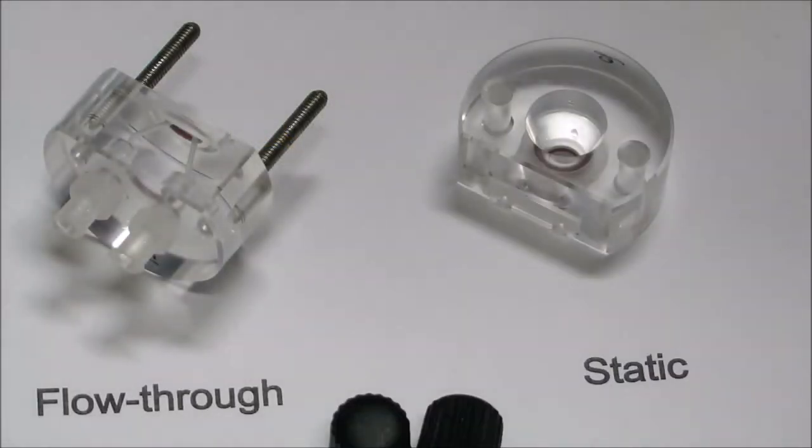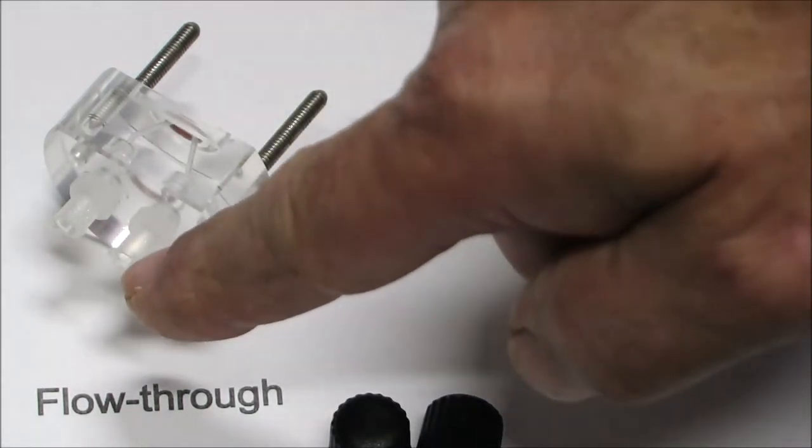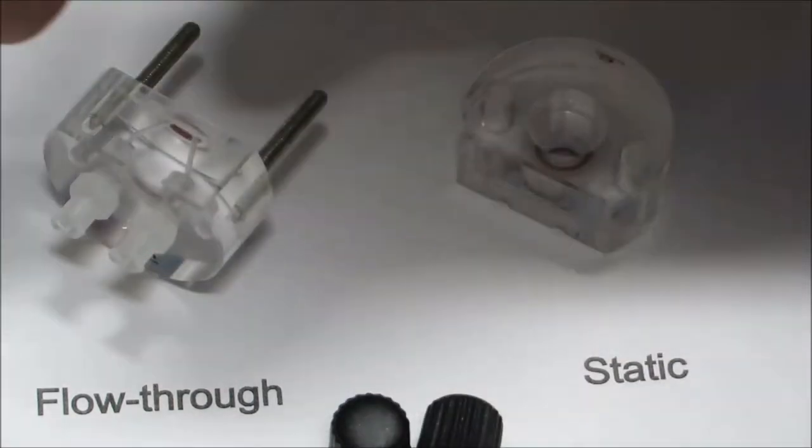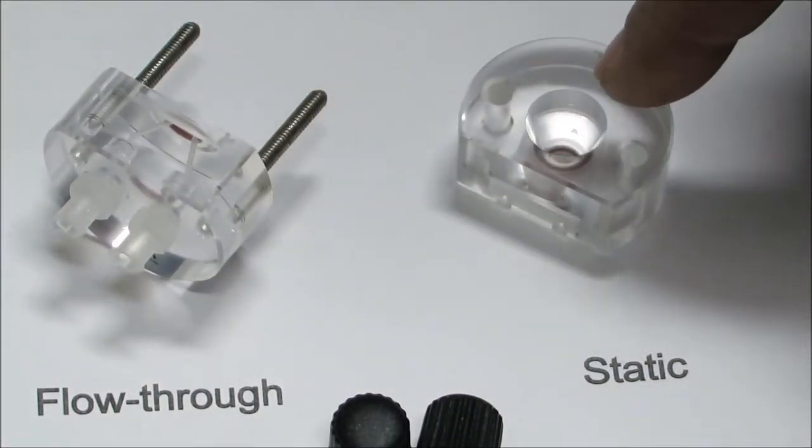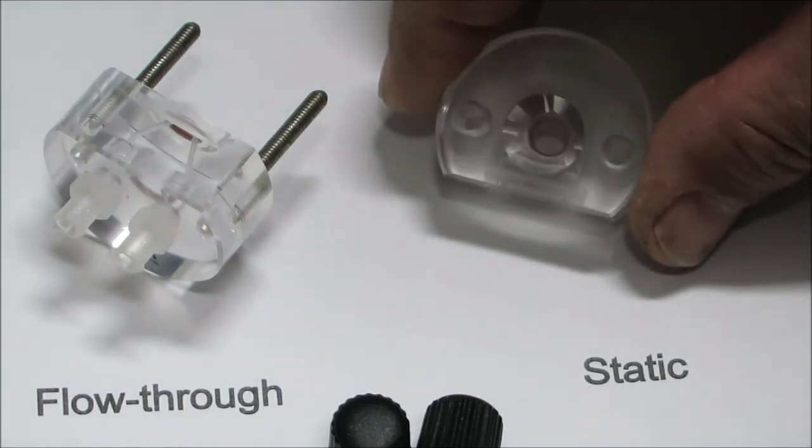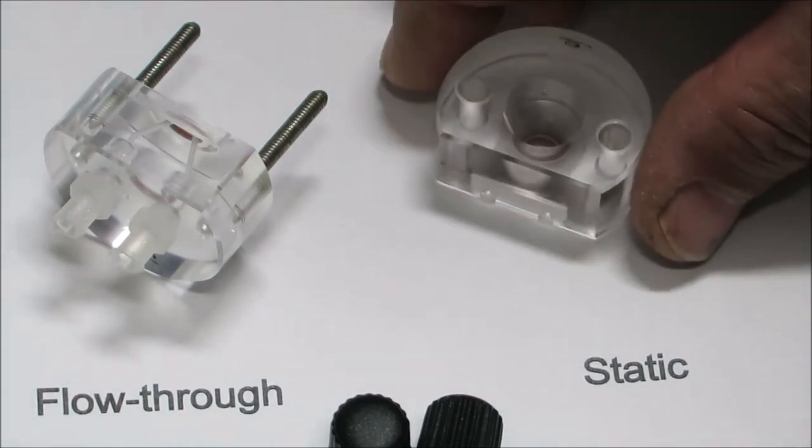The chamber is composed by two halves. One is flow-through and allows you to inlet a flow in one side and get the output on the other side. The second half is static. There is a well where you can put your solution and do the measurements.